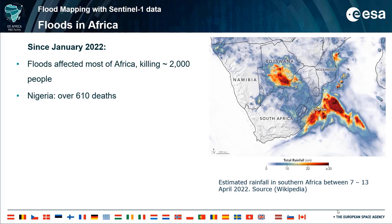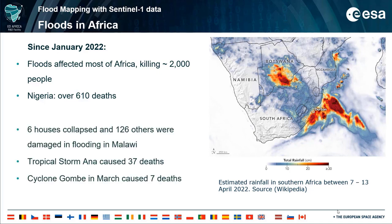Since January 2022, floods that affected most of Africa killed nearly 2,000 people. The worst affected country was Nigeria, with over 610 deaths. In January in Malawi, six houses collapsed and 126 others were damaged. Tropical storm Mana caused 37 deaths in the country, while cyclone Gombe in March caused a further 7 deaths.